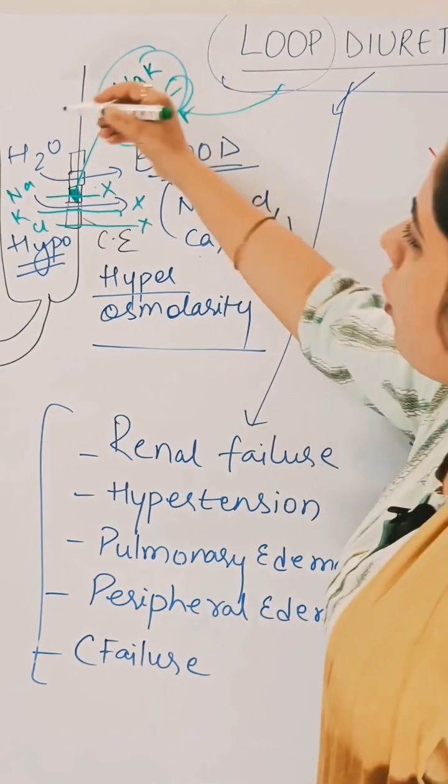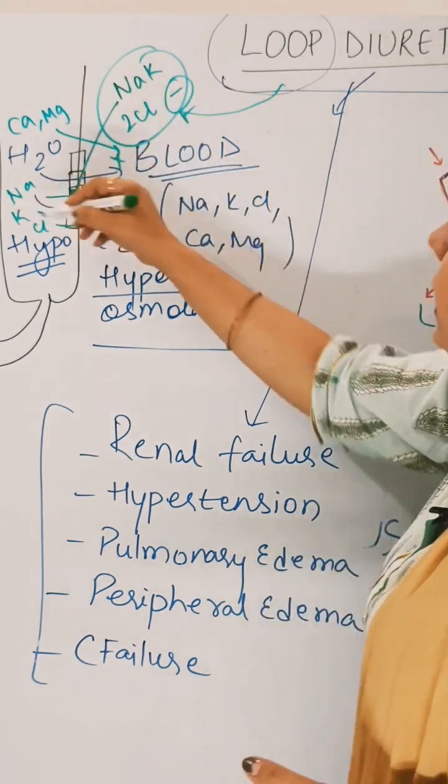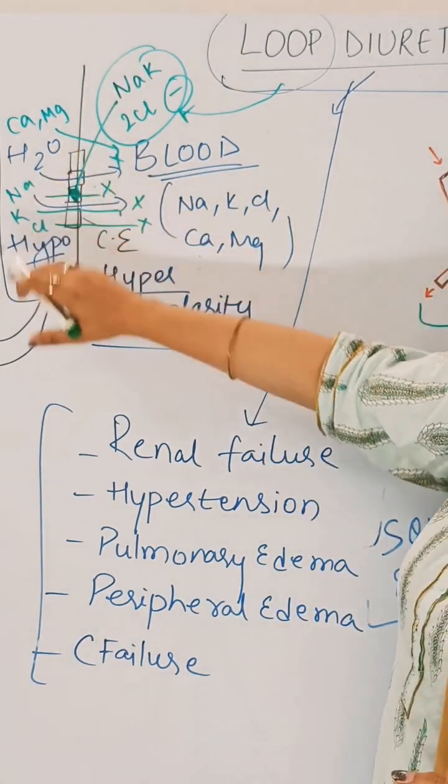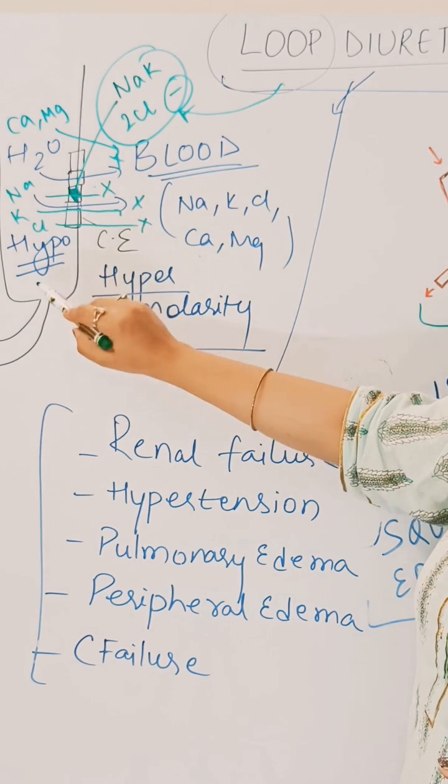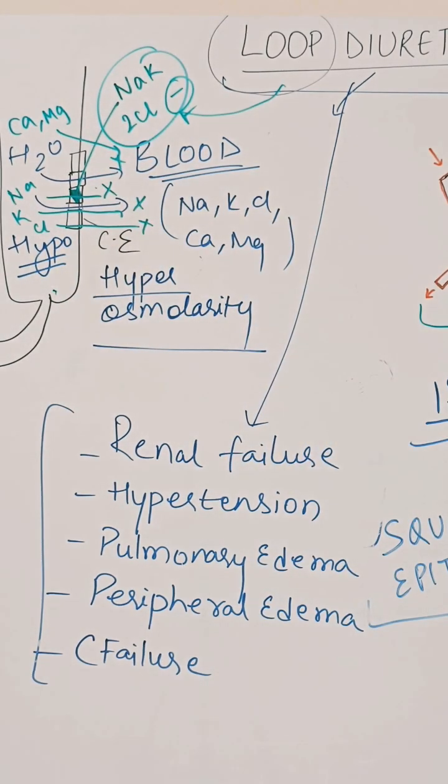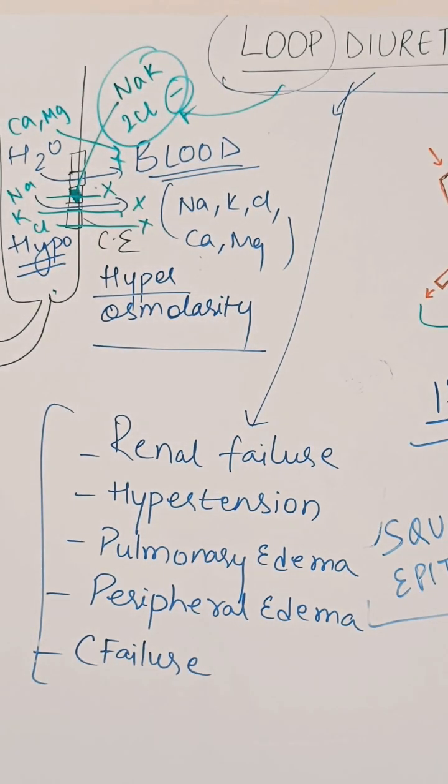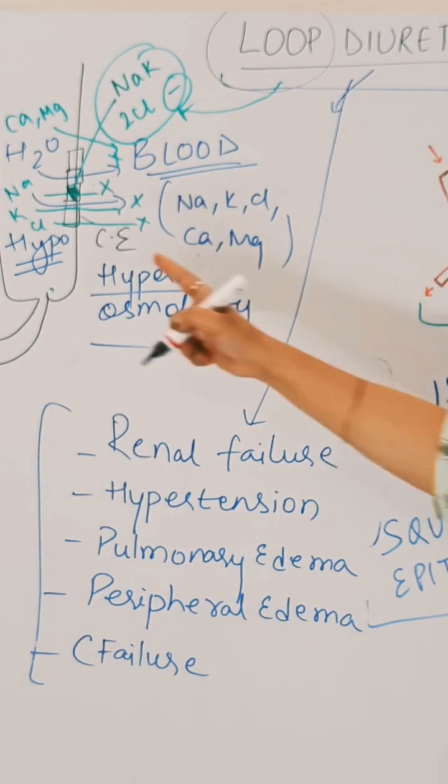So there will be no reabsorption of calcium and magnesium. None of these ions will escape, and all these ions will remain in the ascending loop of Henle, that is the thick loop of Henle. When all these ions are present inside this region they will become a part of urine and they will be lost from the body, along with water.